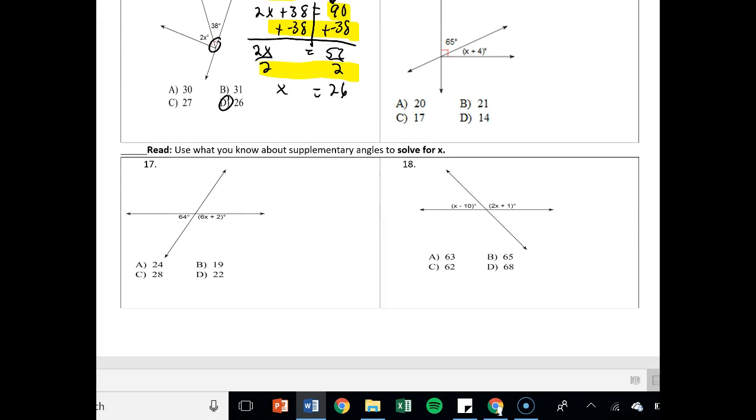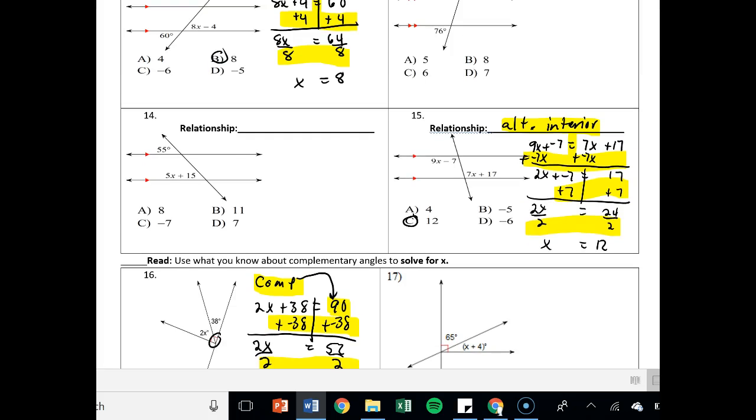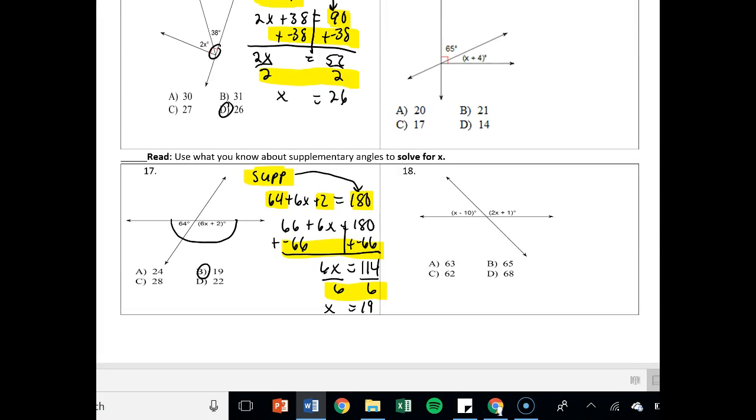And last one is problem number 17. So this time we have a supplementary relationship here. And that's 64 plus 6X plus 2 equals 180. Why 180? Because it was a supplementary relationship. I have like terms in 64 and 2. That gives me 66 plus 6X equals 180. Now it's just a two-step equation. I add negative 66. So 6X is equal to 114. And then I divide by 6. So X is equal to 19. So B, and then I highlight. It was supplementary. That's why I said it equal to 180. Those are my two steps. So big difference between problems 12 through 15 and then 16 through 18. These were complementary and those were the congruent relationships. Call me if you have questions.